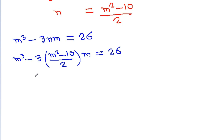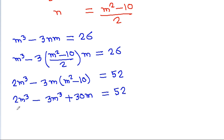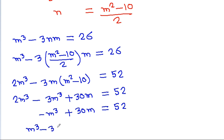Multiplying the equation by 2: 2m³ - 3m(m² - 10) = 52. Expanding: 2m³ - 3m³ + 30m = 52, which gives -m³ + 30m = 52, or m³ - 30m + 52 = 0.